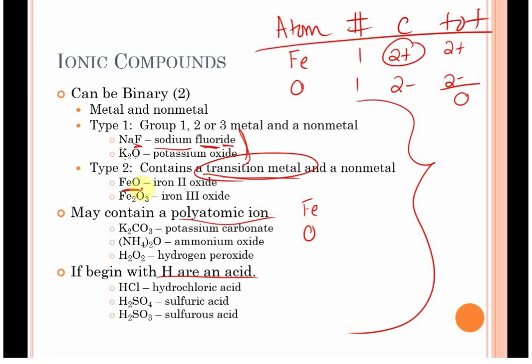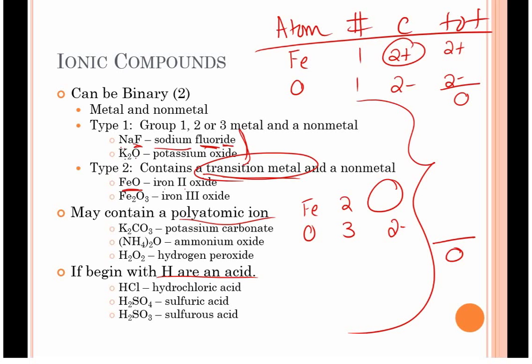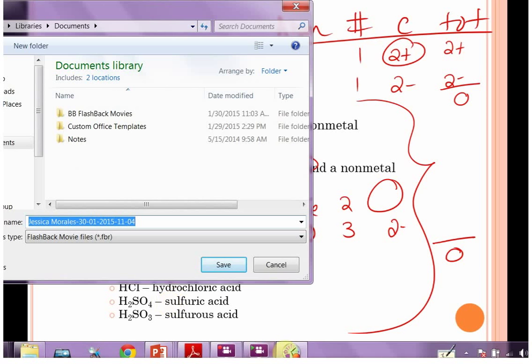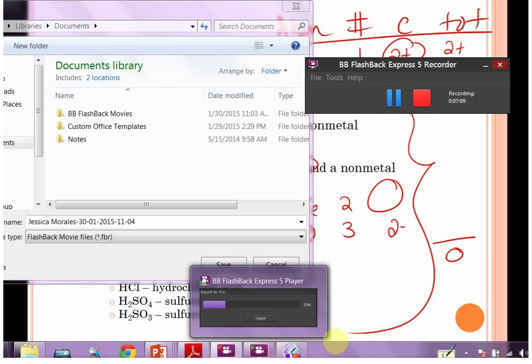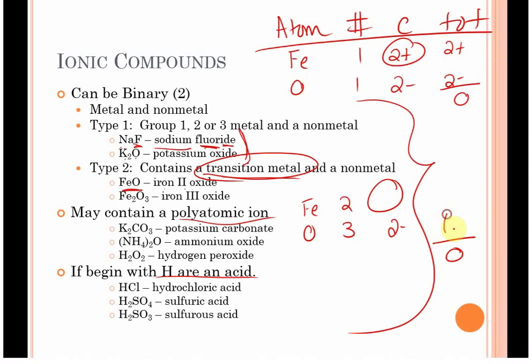On the other hand, if we had Fe2O3, we have two irons, three oxygens. Oxygen is still in group six. So it's going to have a minus two charge. We don't know the charge on iron because it's a transition metal. So we have to go through this table. We know all molecules are neutral. Because all molecules are neutral, this gives us an overall negative charge of negative six. To cancel it gives us plus six. Plus six charge spread over two atoms is going to give us a three positive charge on this iron. So we name this as iron three oxide.